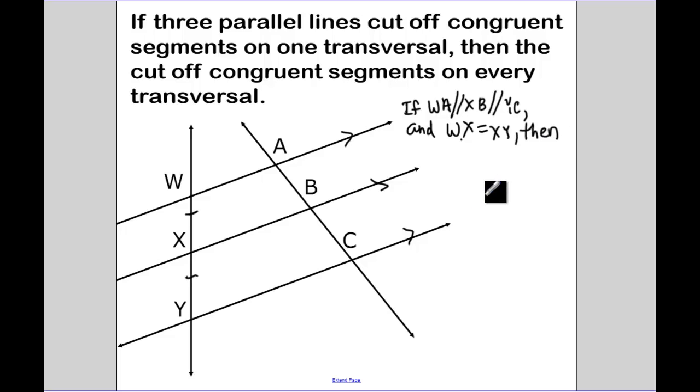Then they cut off congruent segments on every transversal. So then this other transversal that I have here, AC, I'm going to cut off congruent segments. So that means that AB is going to be equal to BC.